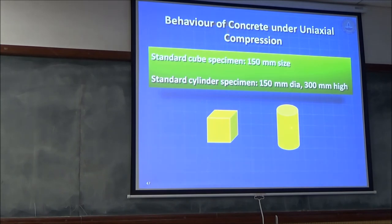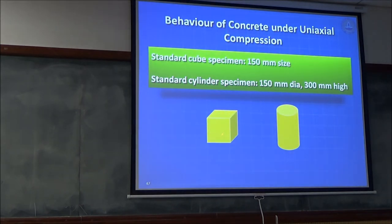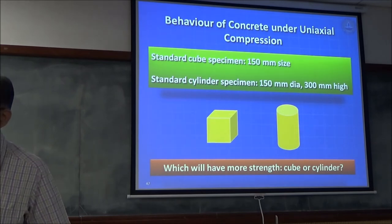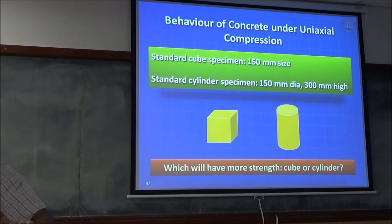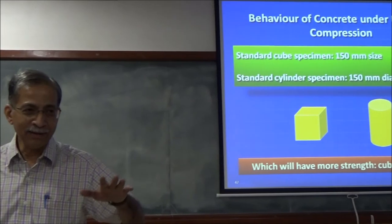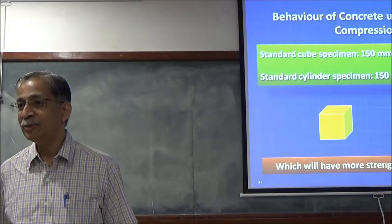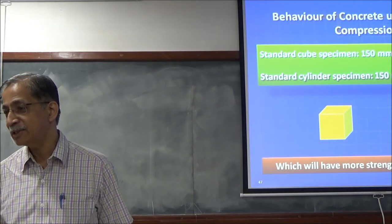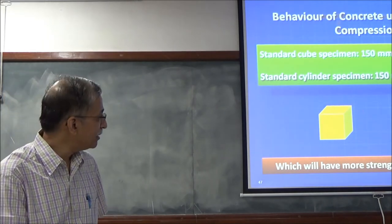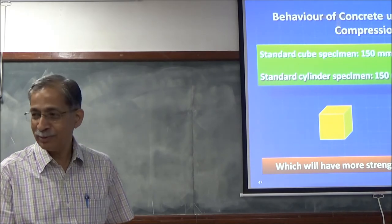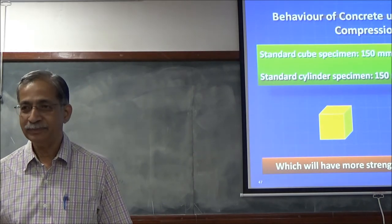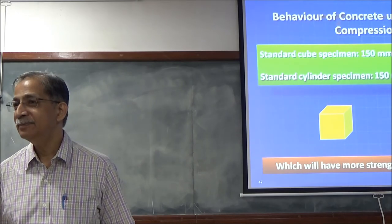Two standard specimens: the cube — 150 mm × 150 mm × 150 mm — and the cylinder. Which gives more strength, the cube or the cylinder, if you use the same mix and test under uniaxial compression? The cube gives more strength — approximately 25% more.